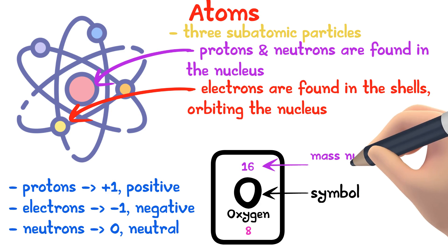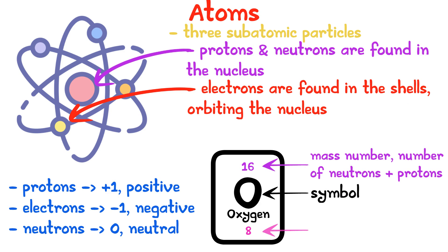16 is the mass number, which is the number of neutrons plus protons and 8 is the atomic number of oxygen, which is the number of protons in the oxygen's nucleus.